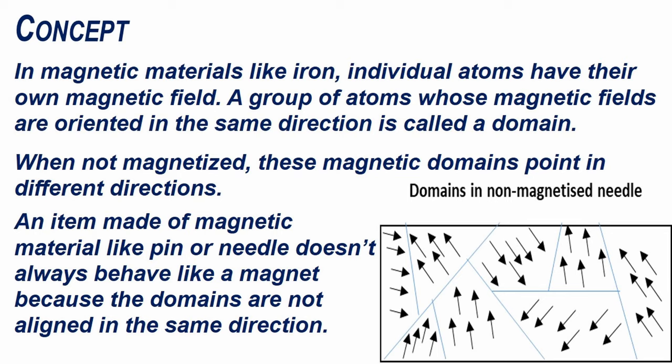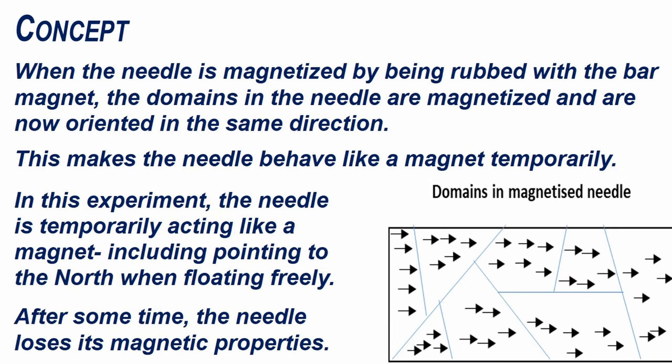An item made of magnetic material like pin or needle doesn't always behave like a magnet because the domains are not aligned in the same direction.